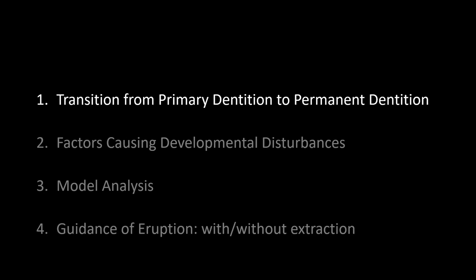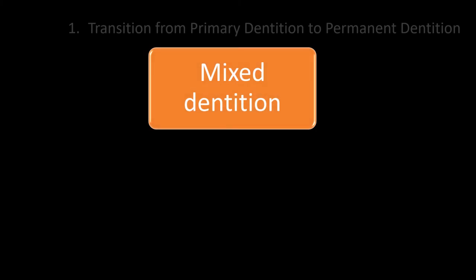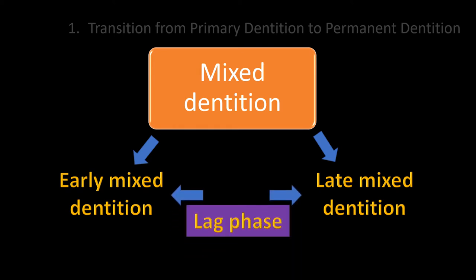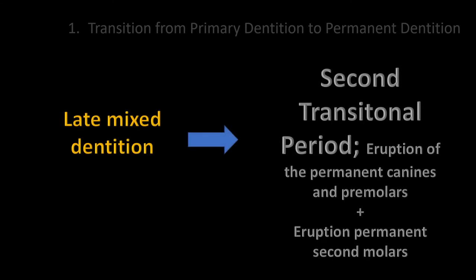In the second part of this webinar, we will discuss the changes that follow during the mixed dentition. Following the early mixed dentition, there is a lag phase — the intertransitional period — lasting approximately one and a half years, during which no important clinical changes occur. The late mixed dentition starts with the second transitional period, which comprises the eruption of permanent canines and premolars and second molars, finishing with the establishment of the permanent dentition.